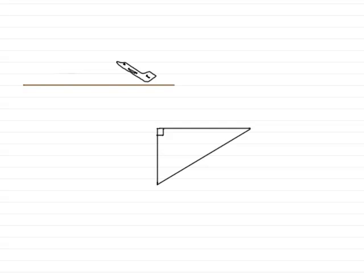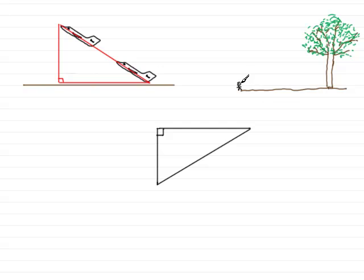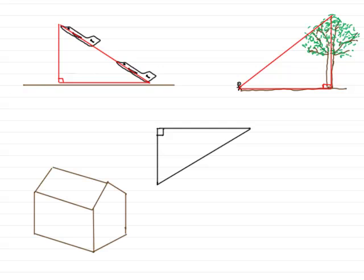Like for instance, we've got an aircraft here just about to take off. It takes off, climbs a certain height, and we could have a right angle triangle in here. Or we could have a tree and we're looking up at the tree, and we've got a right angle triangle there. Or we've got a house with a ladder leaning against it, and we could have a right angle triangle between the ladder, the ground and the wall.